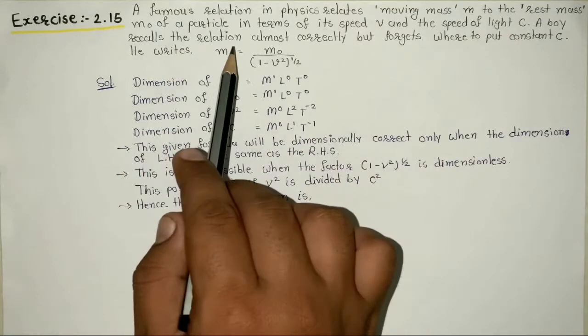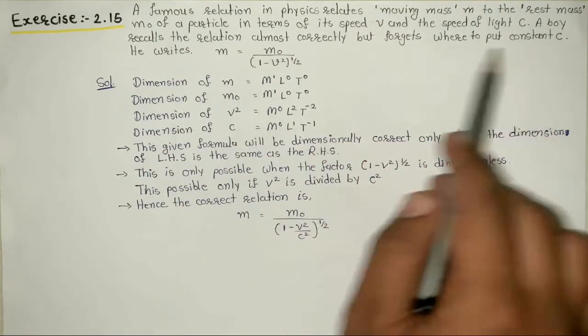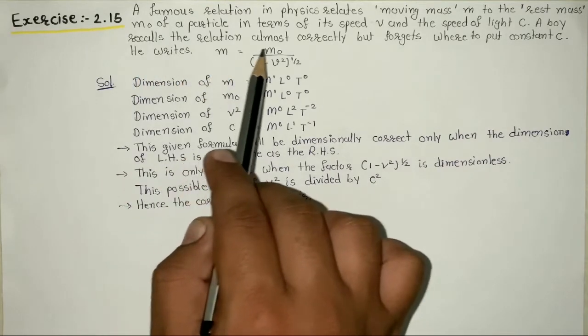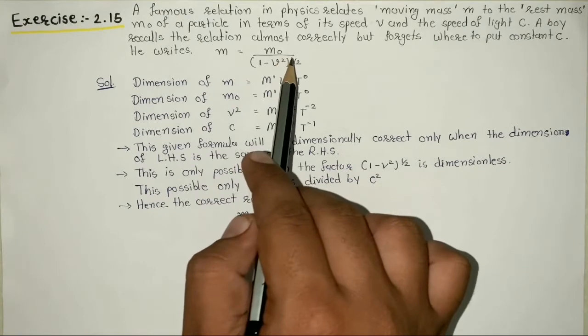A boy recalls the relation almost correctly but forgets where to put constant c. He writes m equal to m0 divided by square root of 1 minus v square.